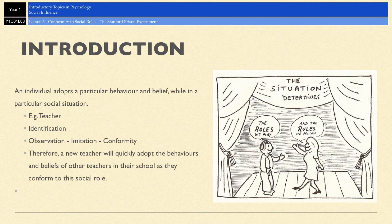Conformity to social roles is when an individual adopts a particular behavior and belief while they're in a particular social situation. For example, whilst you're at school your teacher will adopt the behavior and beliefs of a teacher, which may be very different to the behavior and beliefs they adopt when they're with their friends at the weekend.